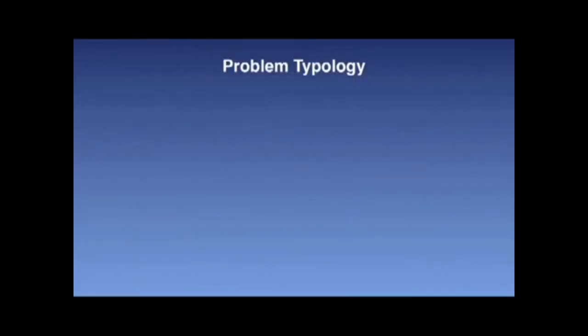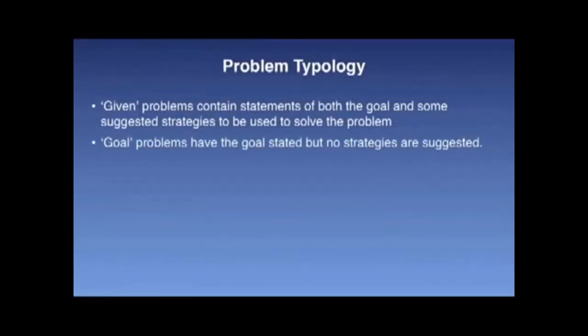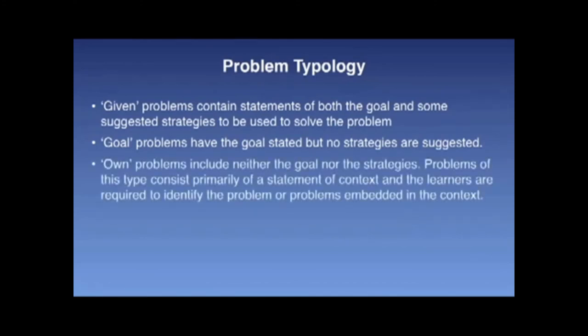Problems can be categorized into a variety of levels of complexity depending on how much contextual information is given to learners. Given and goal problems — again referencing Watts, 1991 — vary by the type of information provided: given problems contain statements of both the goal and some suggested strategies to solve the problem, while goal problems have the goal stated but no strategies suggested. A third type, own problems, includes neither the goal nor the strategies. Problems of this type consist primarily of a statement of context, and learners are required to identify the problem or problems embedded in that context.